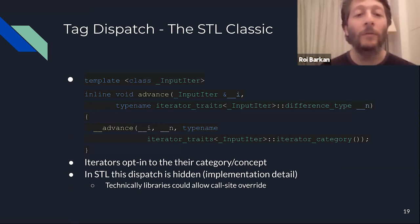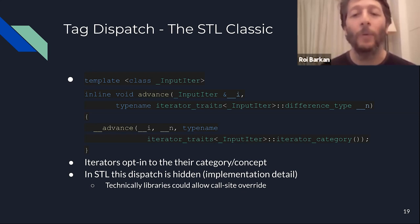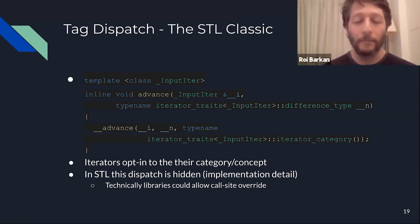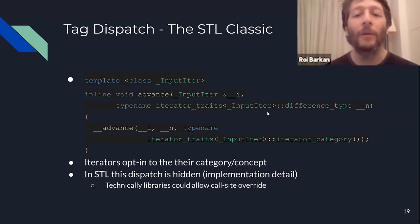The last way I want to show related to overload resolution is called tag dispatch — the classic way the STL usually makes its choice between algorithms. Tag dispatch means that if I want to run a template argument on a specific type, I know the type can be one of several categories, and I can implement functions so they run differently for different categories.